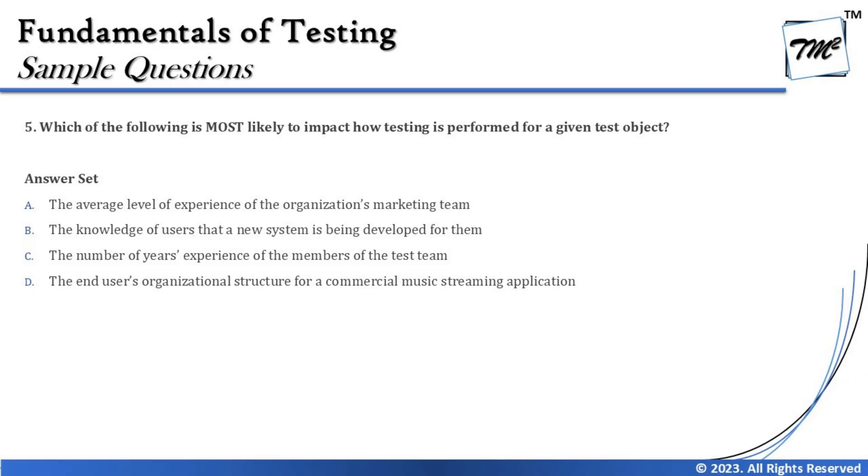Option B says the knowledge of users that a new system is being developed for them. A user's knowledge doesn't make a big difference — we try to assume what the user would do and test it with a user perspective. However, users can be very distinct from each other with different expectations, so a user's knowledge is not something we apply to determine how to test a system. Also, the option notes it's a new system, meaning users are generally clueless when something new is coming.